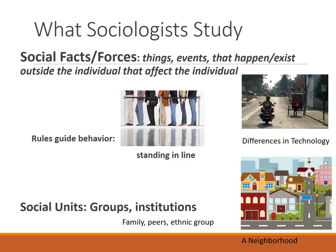So what do sociologists study? An easy answer is to say they study everything. But basically, if we divide it into categories, there would be three major things: number one, social facts and forces outside the individual; number two, the social unit such as institutions or groups; and number three, social processes such as globalization or industrialization. What we see on slide six are the first two — the social facts or forces — things and events that happen outside the individual but affect the individual. Certainly the rules of society guide behavior.